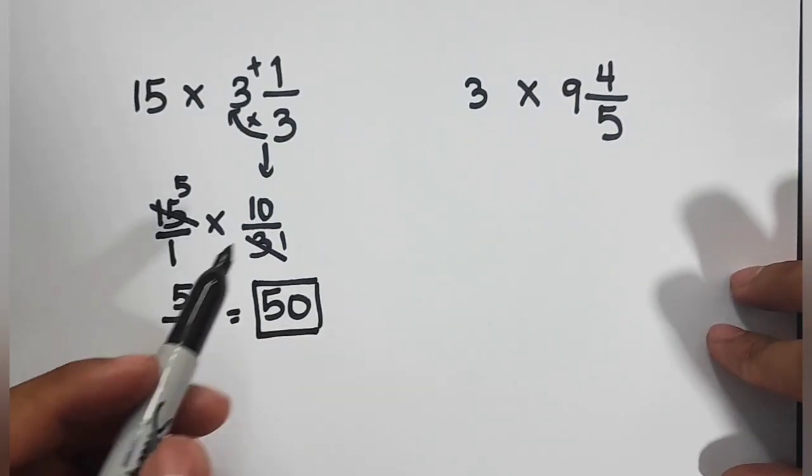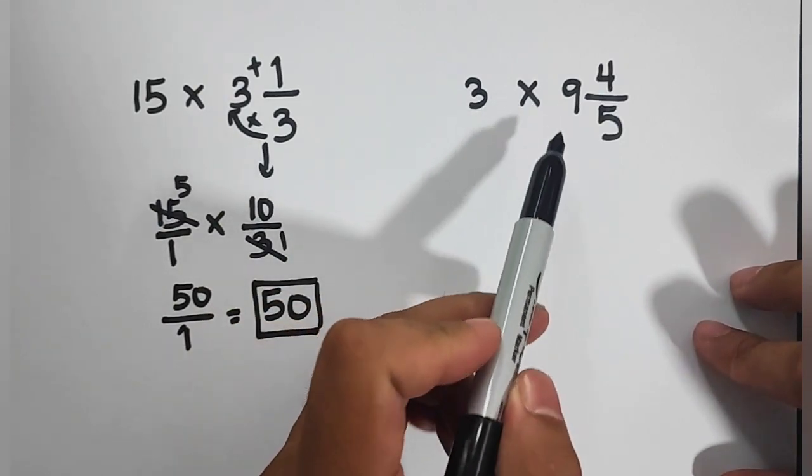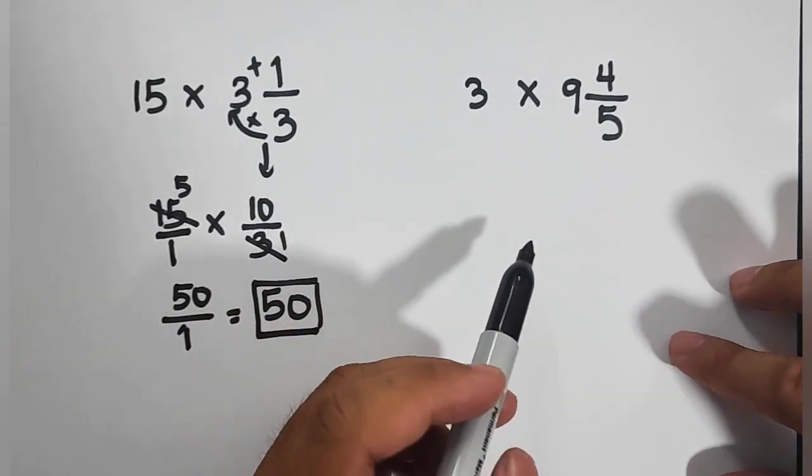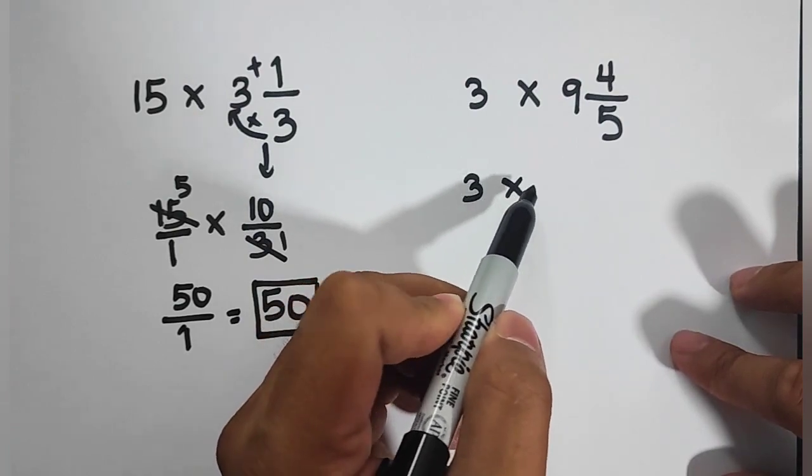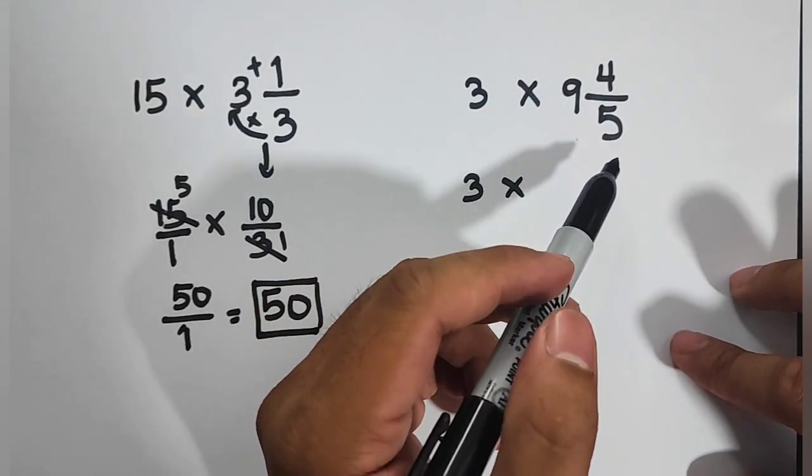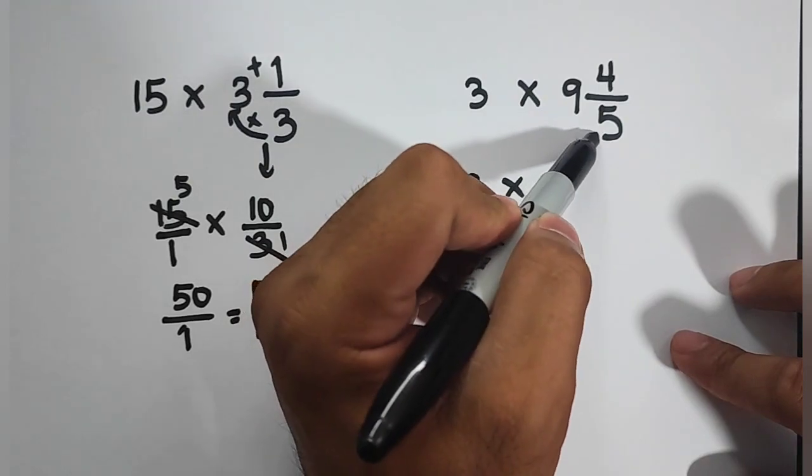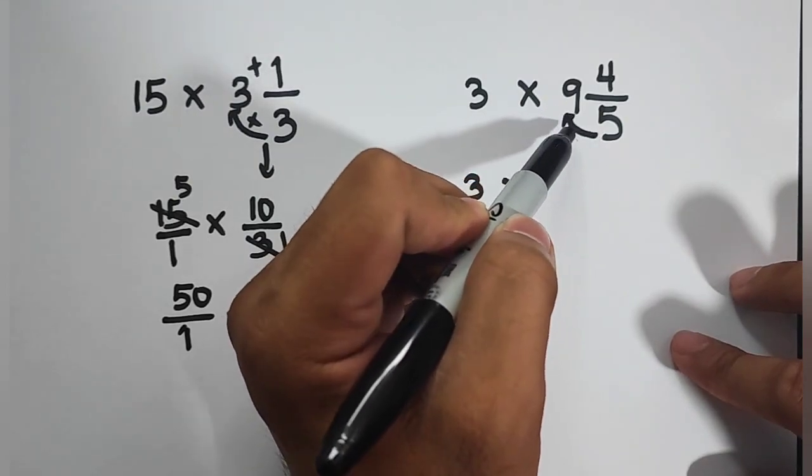Now, let's move on with item number 3. For number 3, we are given 3 times 9 and 4 over 5. So we will copy your whole number 3 times. Here, we will convert this into mixed numbers.